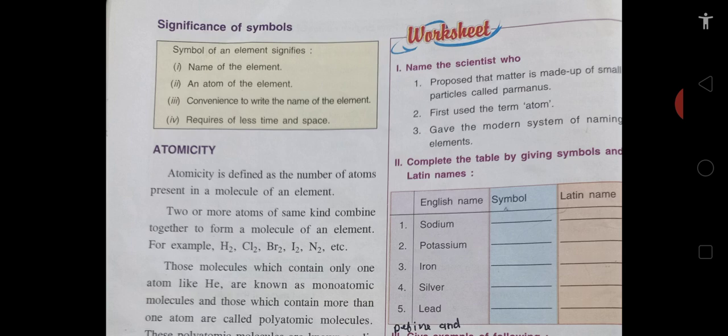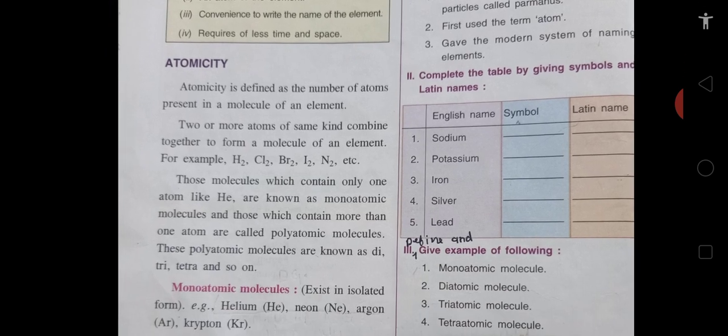The next topic is atomicity. Atomicity is defined as the number of atoms present in one molecule of an element — you have to learn this definition. Two or more atoms of the same kind combine together to form a molecule of an element — for example, hydrogen H2, chlorine Cl2, bromine Br2, iodine I2, nitrogen N2. Molecules which contain only one atom, like helium, sodium, and potassium, are known as monoatomic molecules. Those which contain more than one atom are called polyatomic.